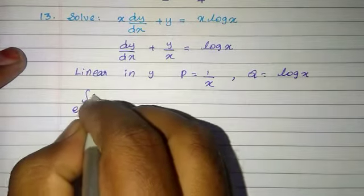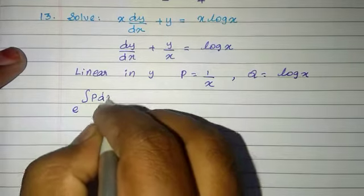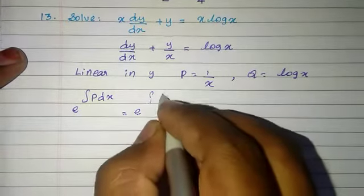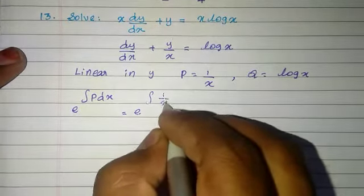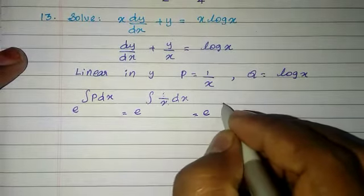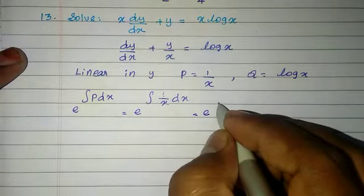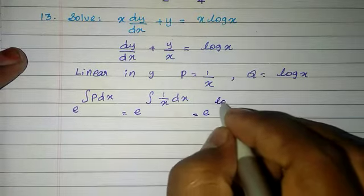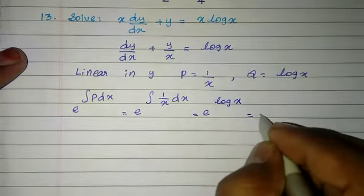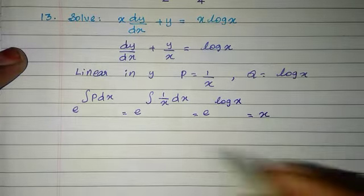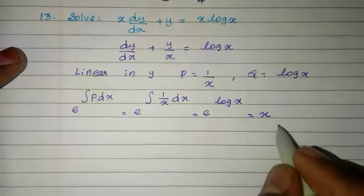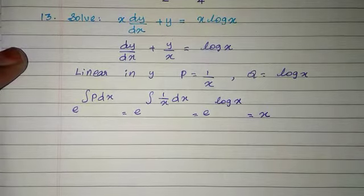The integrating factor is e power integral P dx, which is e power integral 1/x dx. The integral of 1/x is log x, so e power log x. Since e power log cancels, the integrating factor equals x.